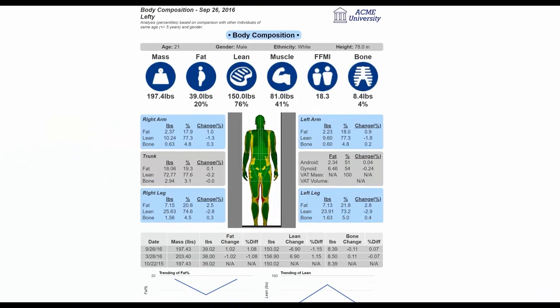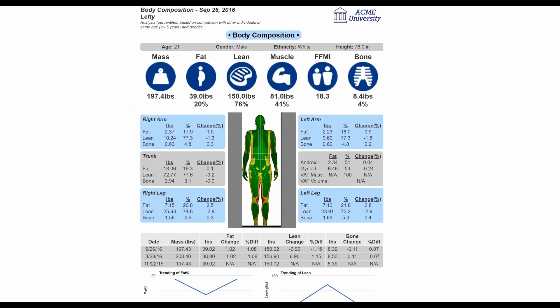Thanks Mike. Okay folks, hopefully you can see my screen. This is the basic body composition report from DEXA using the FitTrace app, and I'm going to cover just the basics here and then show you some comparisons. In this report you can see this athlete — we're calling them Lefty, it's ironic, you'll see in a minute — they're from Acme University. This is essentially de-identified data. You see height, ethnicity, gender and age up at the top.